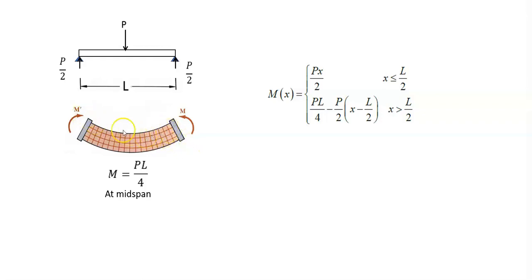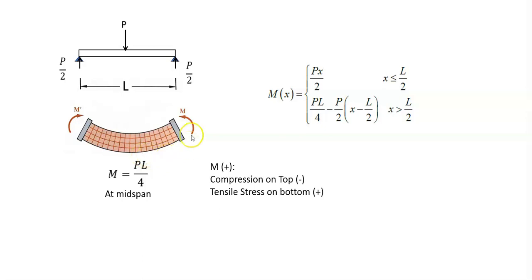Notice that the top surface of the beam is under compression and the bottom surface is under tensile stress. So when the moment is positive, we would have compression on top and tension at the bottom surface. Compression is considered negative and tension is positive.